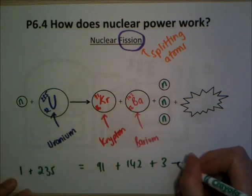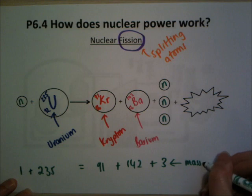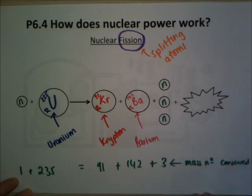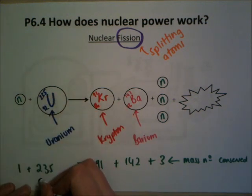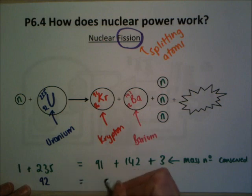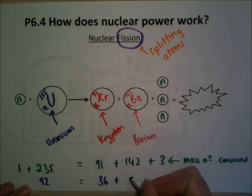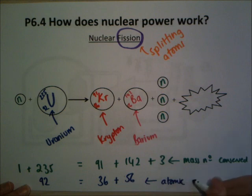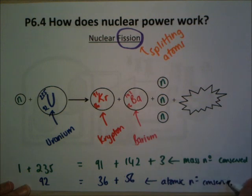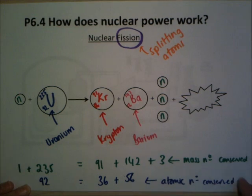Adding up: 91 + 142 + 3 = 1 + 235, which gives 236 = 236. So the mass number is conserved. The atomic number is simpler: 92 equals 36 plus 56, since a neutron has an atomic number of zero. Exactly like those nuclear equations, both sides are equal — the atomic numbers are also conserved.